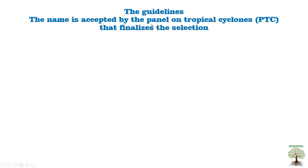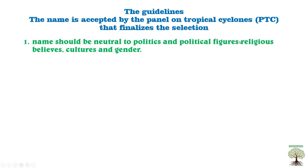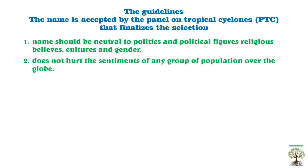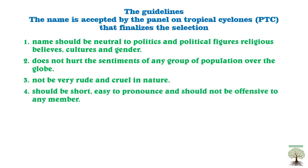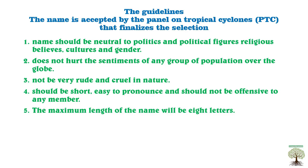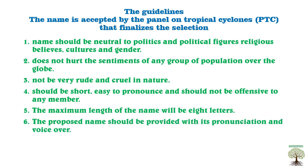The rules for naming cyclones, finalized by the panel on tropical cyclones, are: (1) Names should be neutral to politics, religious beliefs, cultures, and gender. (2) The name should not hurt the sentiments of any group. (3) It should not be rude or cruel. (4) It should be short, easy to pronounce, and not offensive. (5) The maximum name length is eight letters. (6) Each proposed name must include pronunciation and voice-over.